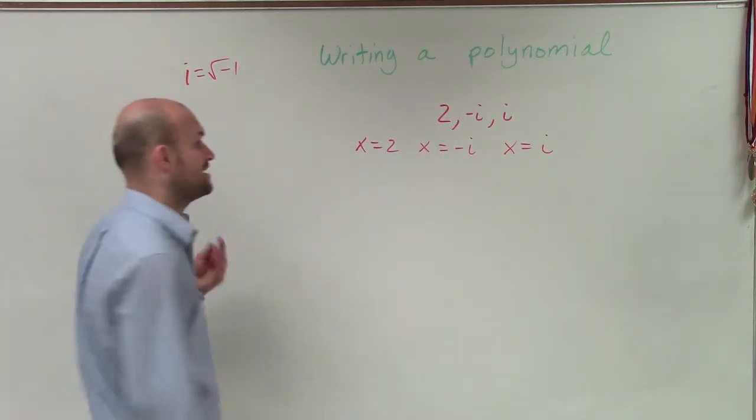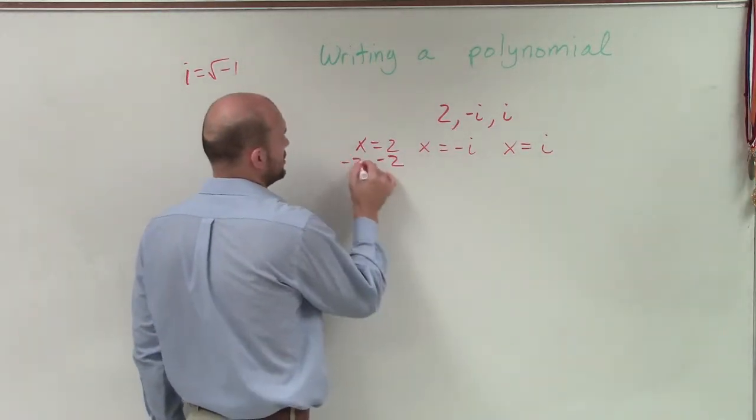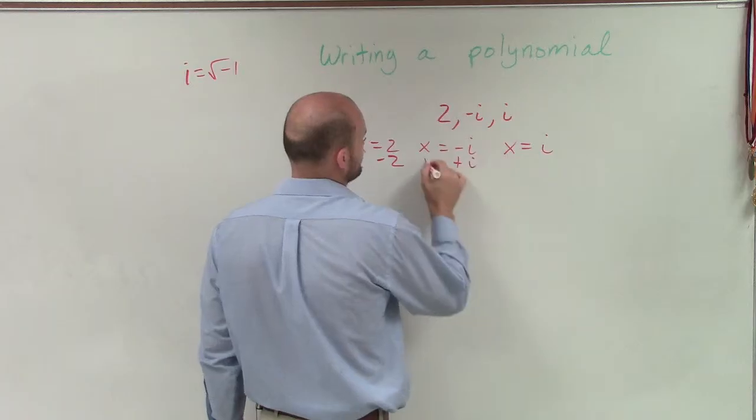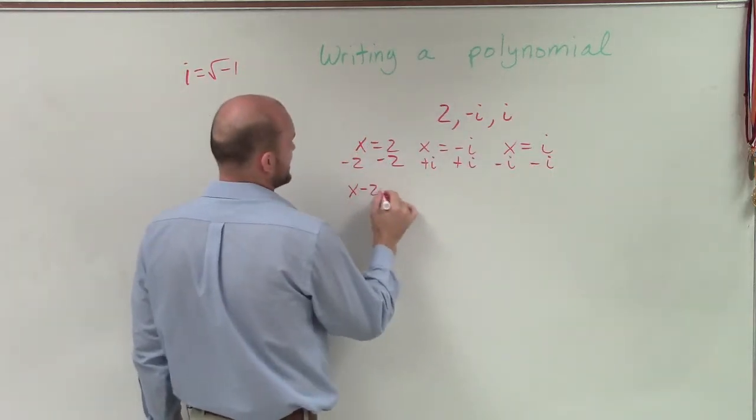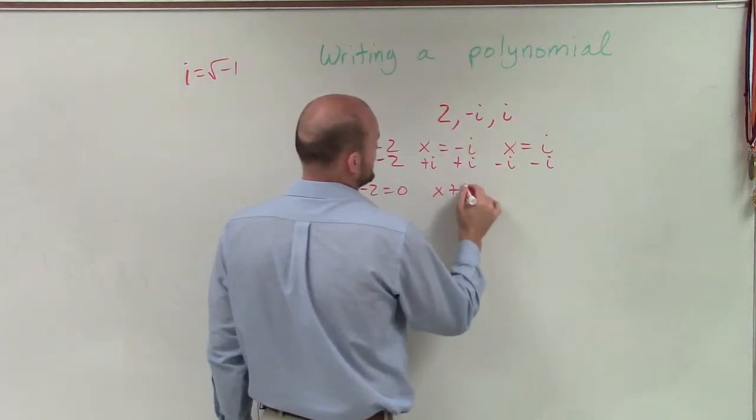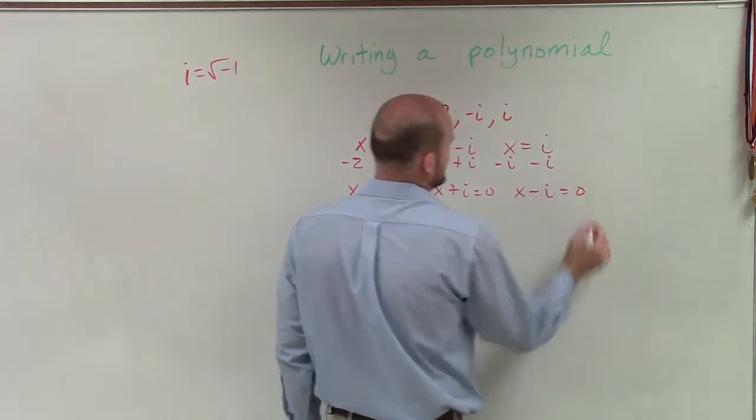Now I need to write them as factors. So what I'm going to do is I'm going to set these all equal to 0. So therefore, I have x minus 2 equals 0, x plus i equals 0, and x minus i equals 0.